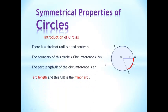Here, the part length AB — this one AB — part of this circumference is an arc length. This is called arc length. This red-colored arc is apart from the circumference.